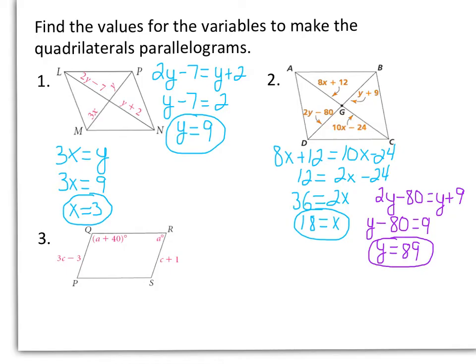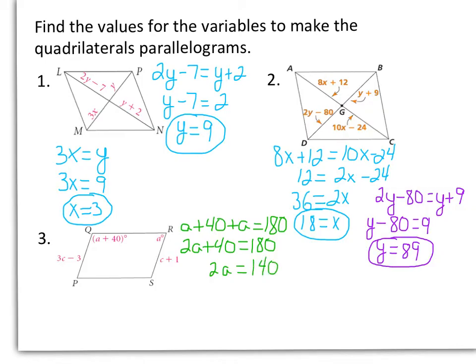I'm first going to solve for A. I can say A plus 40 plus A equals 180. Combining like terms: 2A plus 40 equals 180. Subtracting 40, we have 2A equals 140. Dividing by 2, we get A equals 70.